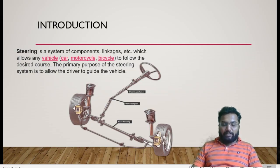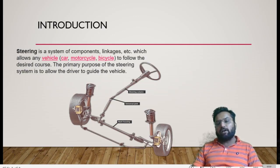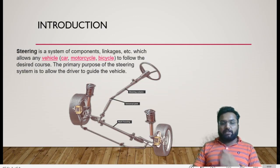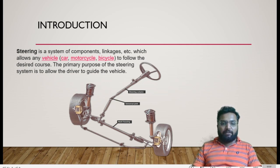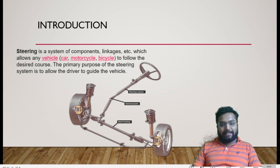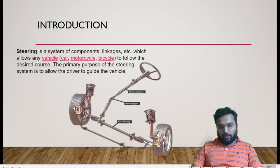There could be a tie rod, that could be a gear mechanism, that could be a rack and pinion, or any kind of mechanism which will ultimately pivot our wheels to have that desired course or path line.